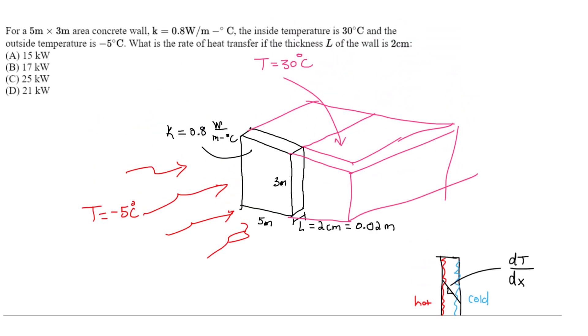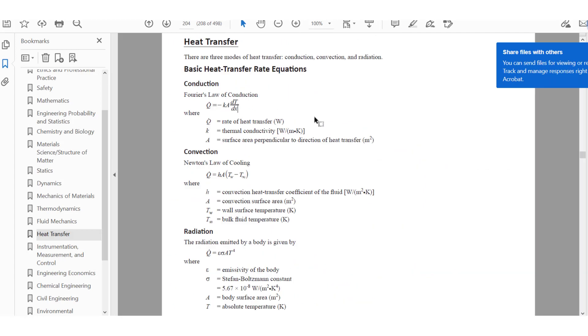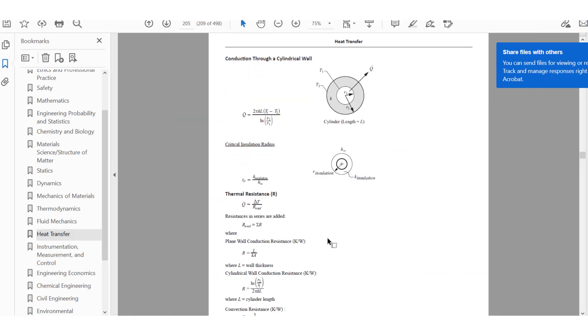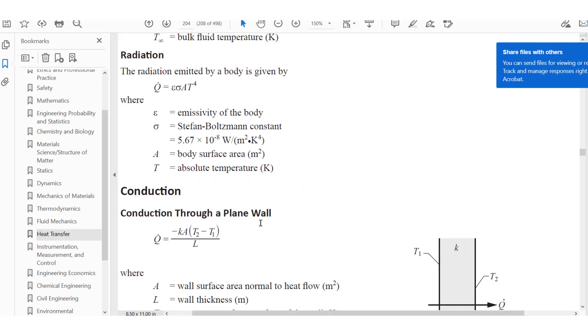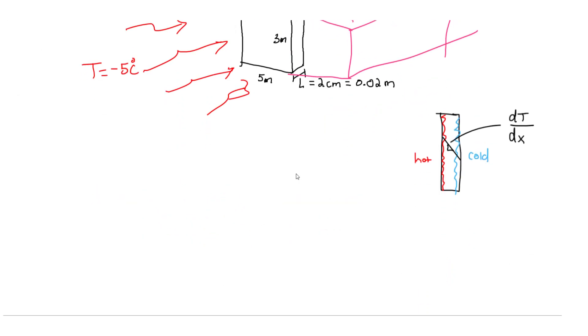So we're looking at conduction here. Specifically, I'm going to not use this equation. There's an equation that's specific to walls in the FE handbook. It's this one, conduction through a plain wall. So let's use this equation. K value is still there, A is still there, the temperature difference is still there, and L is going to be the wall thickness.